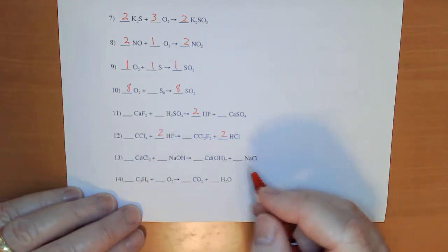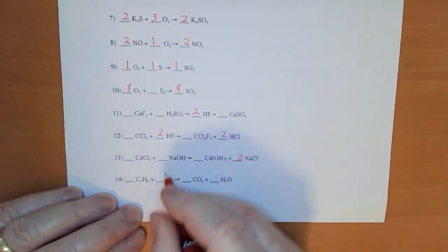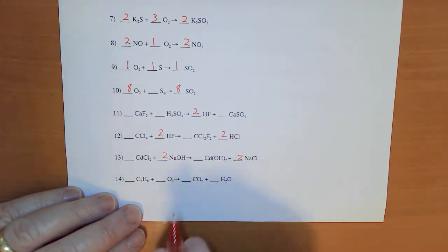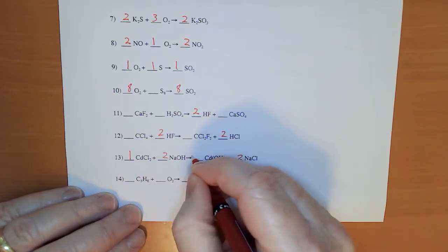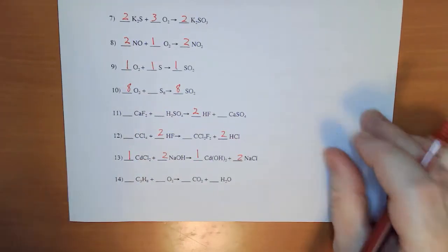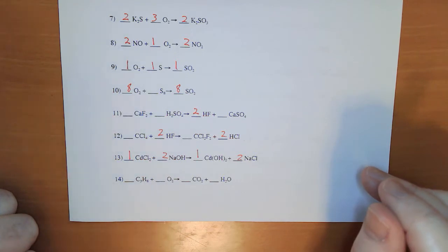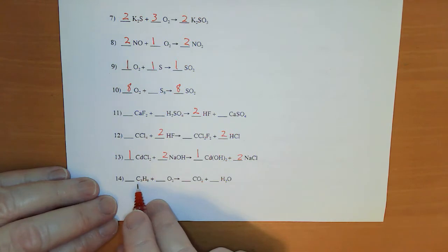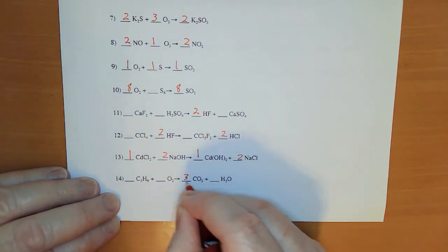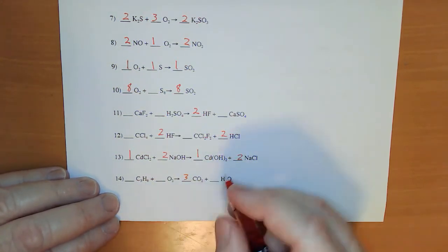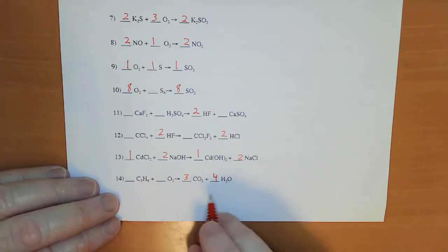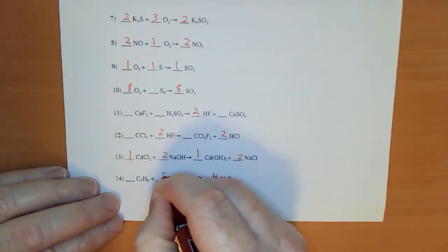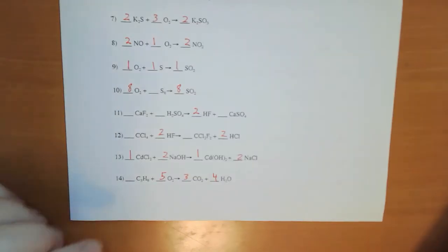I'm noticing a 2 on the Cl's, so I have to put 2s there and there. And then it looks like everything else is balanced. A little more challenging: I've got a 3 here, so I'm going to put a 3 on the CO₂. I've got an 8 on the hydrogen, so I'm going to put a 4 in front of the water. 2 times 3 is 6, plus 4 more oxygens is 10, so I put a 5 on the O₂.